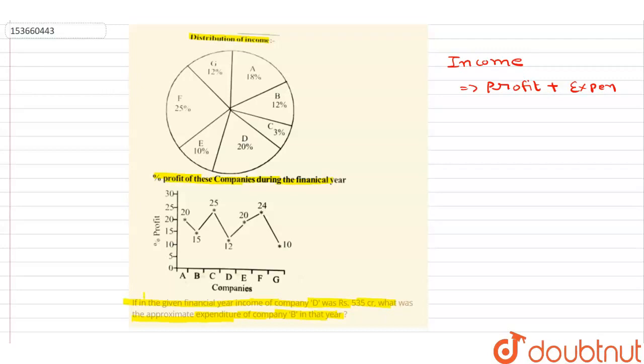Question may kya diya hai. Income of the company D was 535 crores. So company D ki income is equal to 535 crores. D out of total percentage that is equal to 20 percentage. D is 20 percentage. B is 12 percentage. B is 12 percentage of total and D is 20 percentage of total.